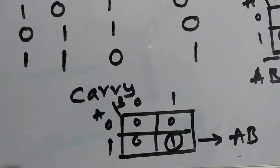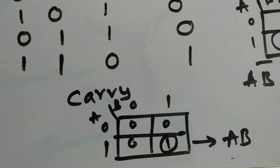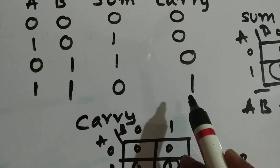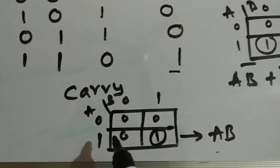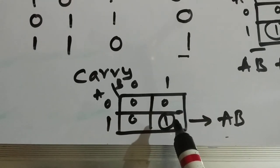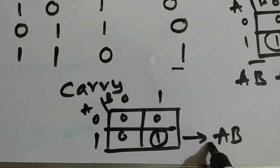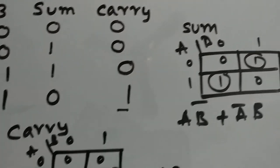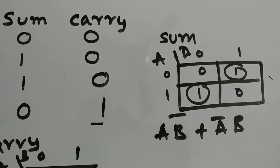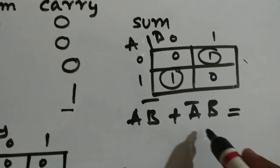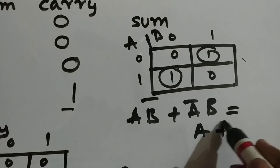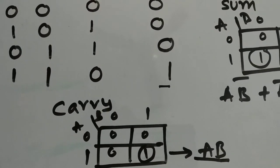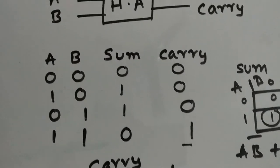Now let's look at the K-map for carry. From the K-map of carry we can see that only one cell has a 1, that is when A and B are both 1. So the value of the carry output is simply A AND B. By this we understand that sum equals AB̄ + ĀB, which is nothing but A XOR B, and carry is a simple AND gate.